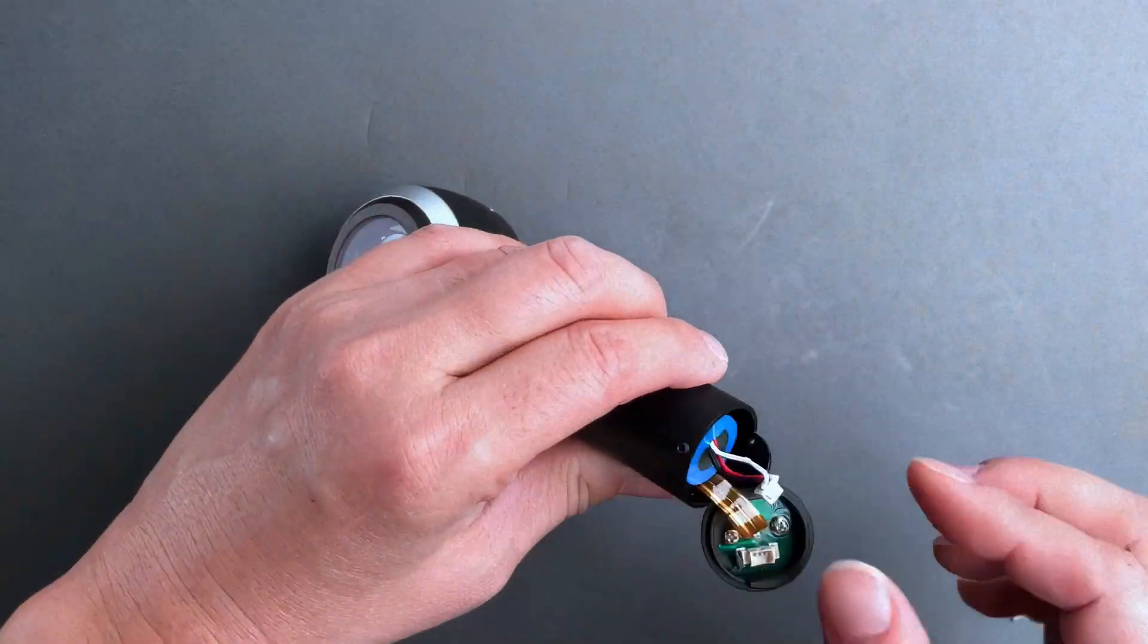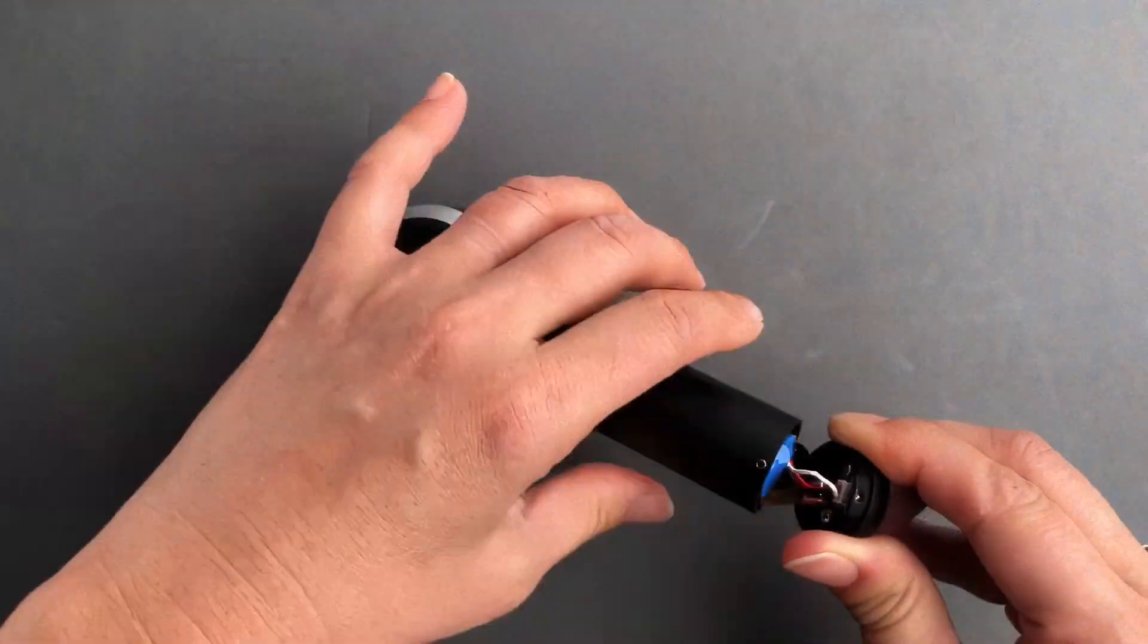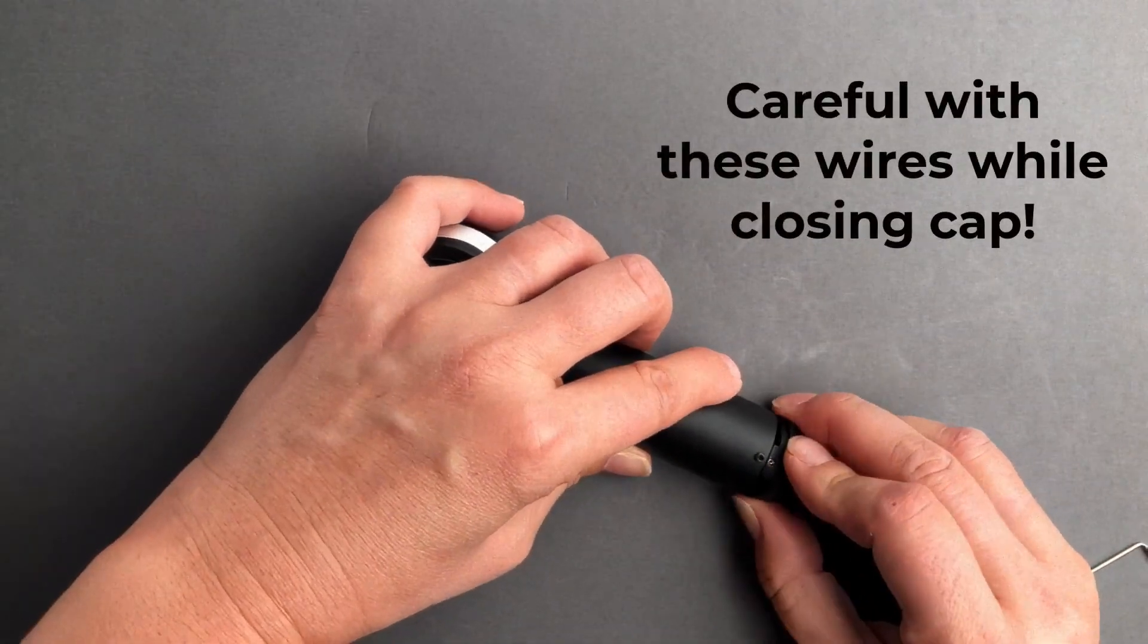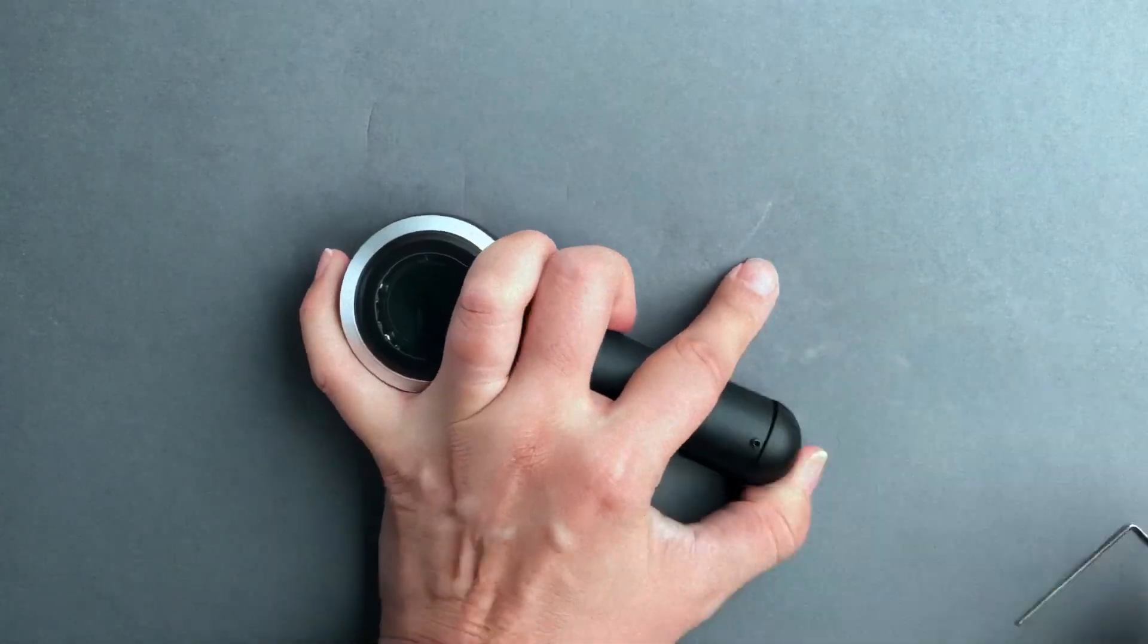Then insert the new battery and reconnect the battery connector. Finally, you'll close the battery cap, being careful not to damage any wires while pushing it into place, and then just tighten the set screw.